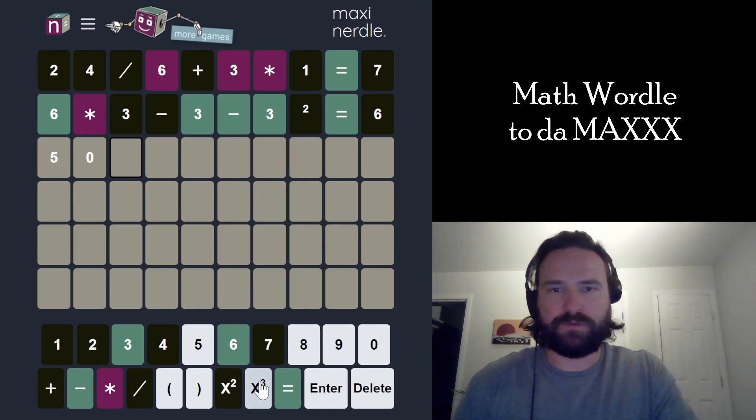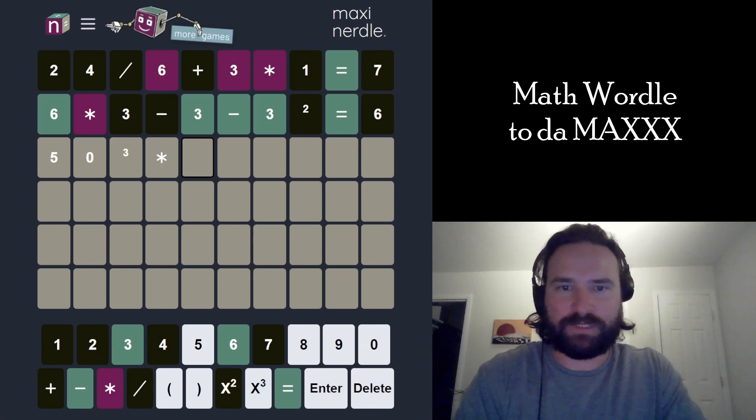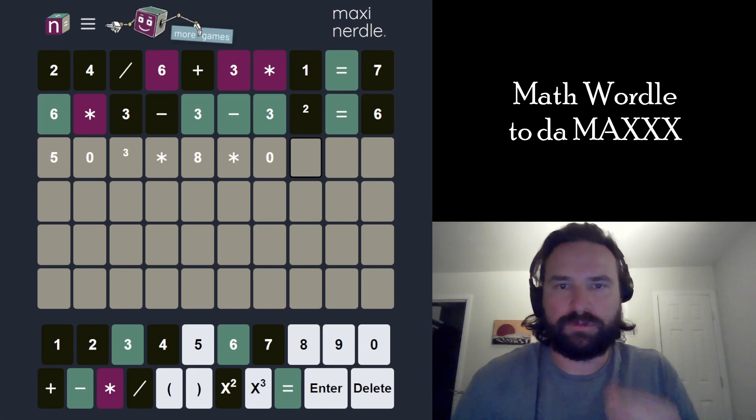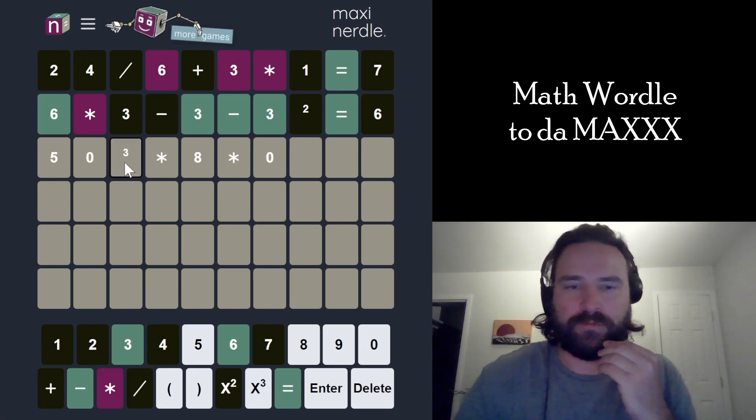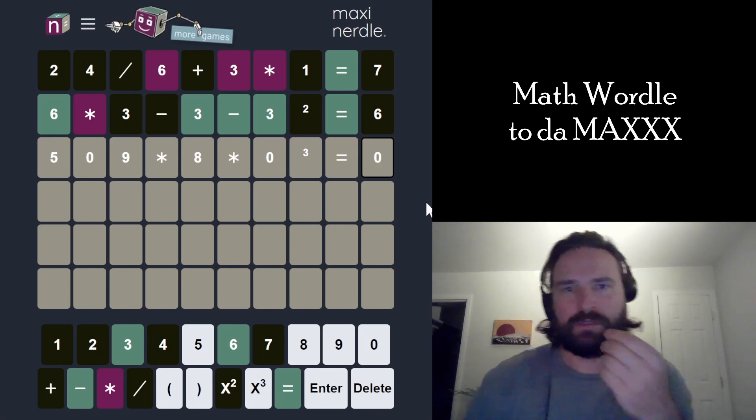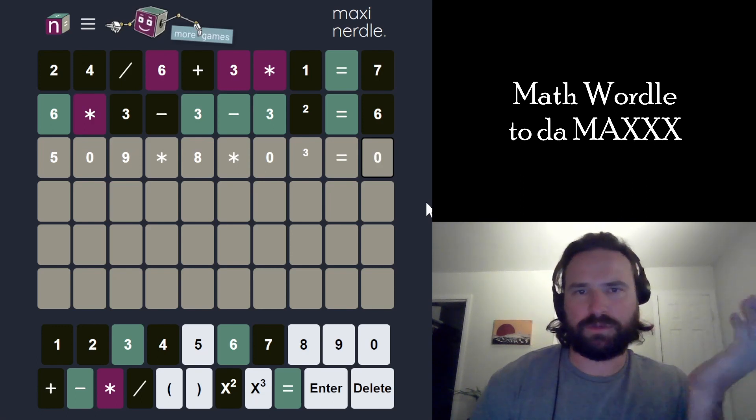I could just do a bunch of stuff and then just multiply by zero at the end. Times 8... Times... Whatever. Times zero. Oh, I could just do 509. 509 and then cube the zero. Because I want to see if there's a zero there specifically. Yeah, this is good. Did I use all... I used all the numbers.